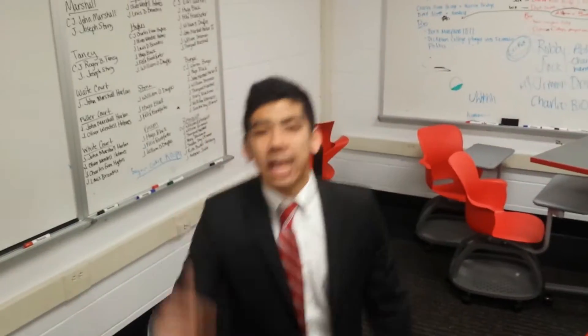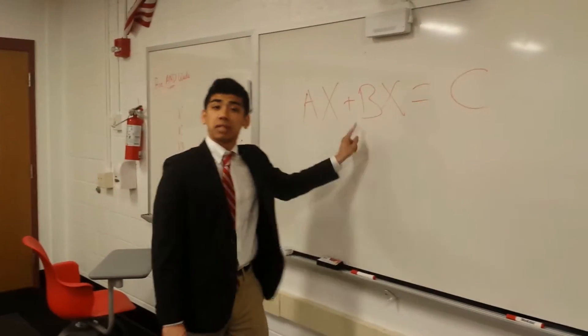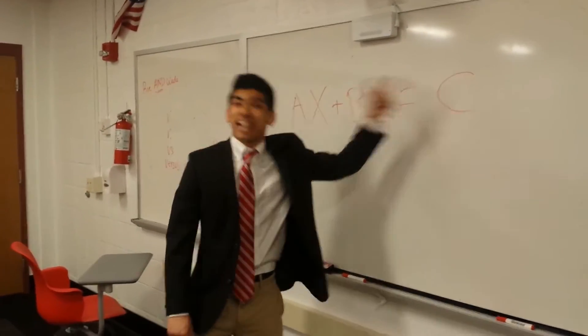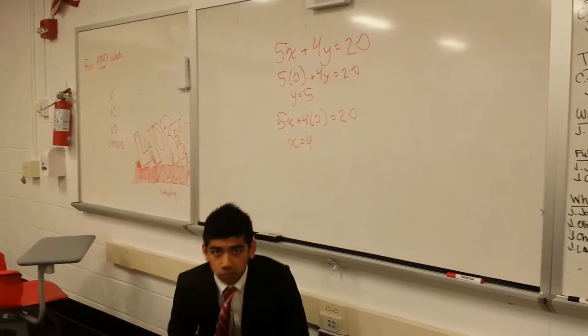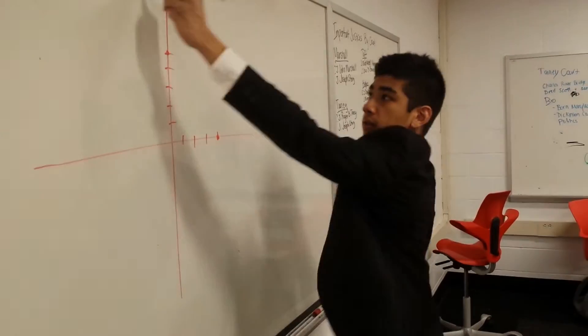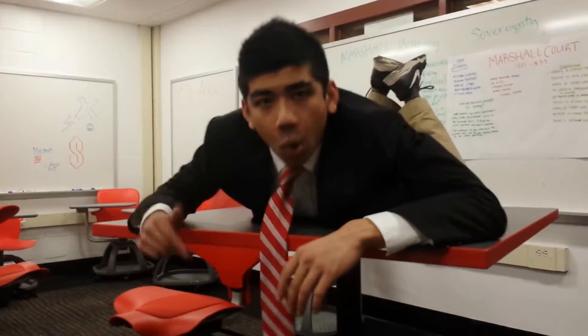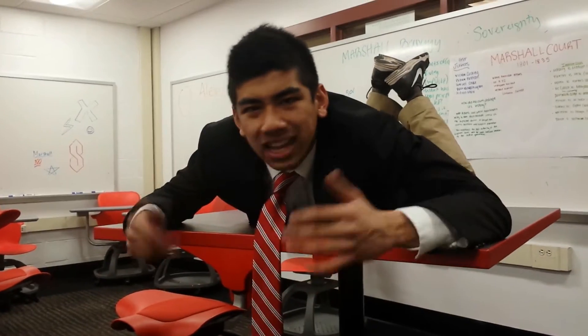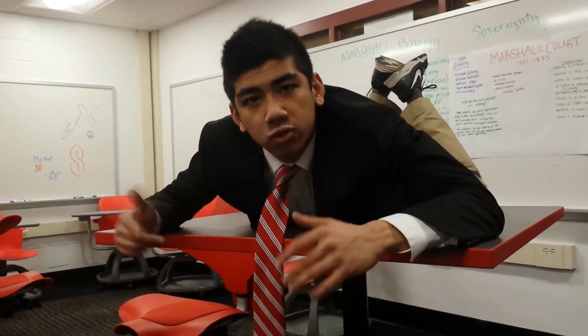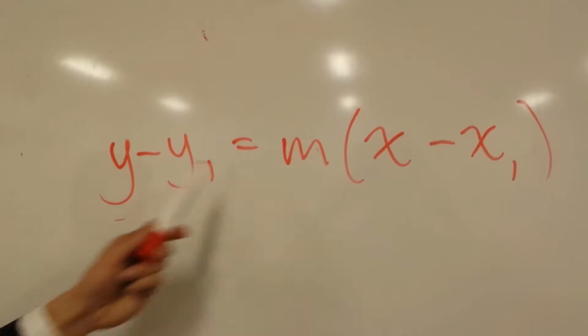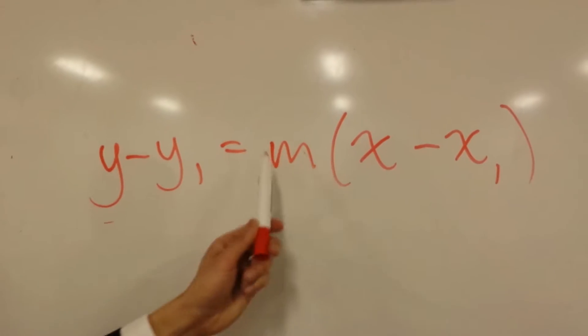Yo, refresh on standard form in case you've lost it. ax plus by equals a constant. To solve for your intercepts, make x or y zero, then connect the dots — I mean it, like literally. Point-slope form might make you feel queasy with a slope and a point. It's really pretty easy. y minus a y-point equals m times the quantity x minus x-point.